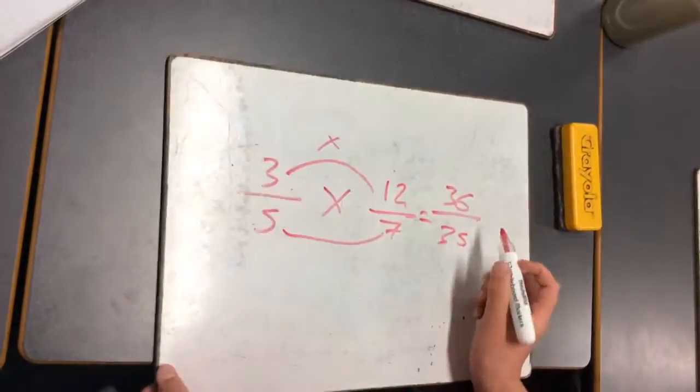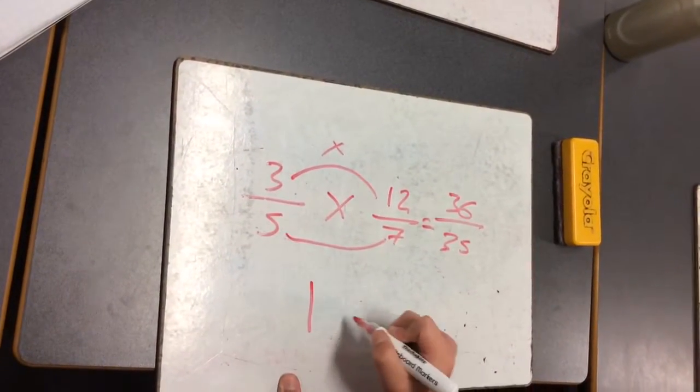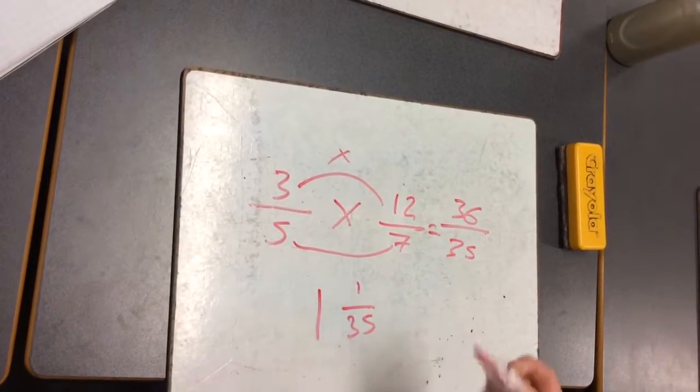And if you wish, you can do a mixed number fraction, which would be 1 and 1 35th.